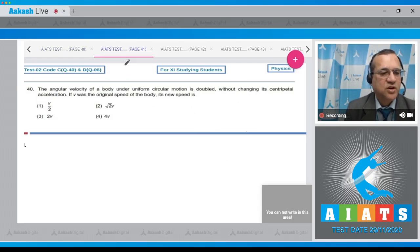Question number 40: The angular velocity of a body under uniform circular motion is doubled without changing its centripetal acceleration. If v was the original speed of the body, its new speed is. The centripetal acceleration is equal to v square by r or omega square r or v omega. Now in your case, AC is same.